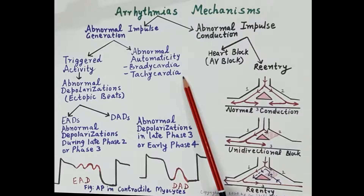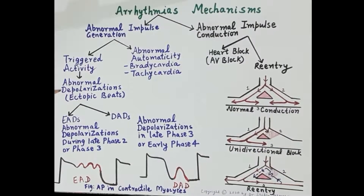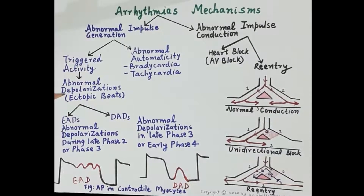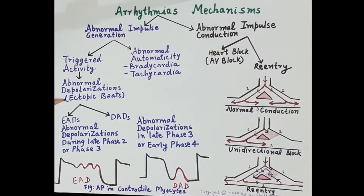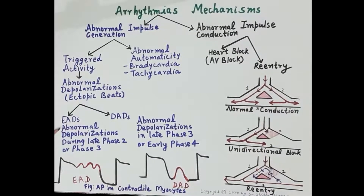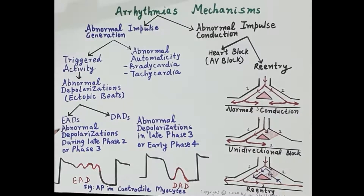Triggered activity refers to the generation of abnormal depolarizations — abnormal action potentials, extra action potentials, immature action potentials, or ectopic beats. These abnormal or immature beats increase the heart rate, resulting in tachycardia. Triggered activity produces two types of depolarization: early after depolarization and delayed after depolarization.